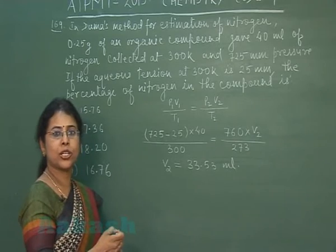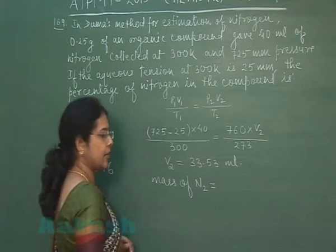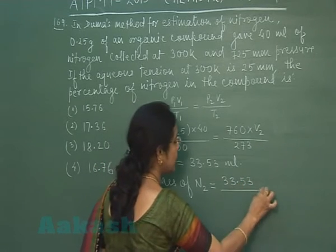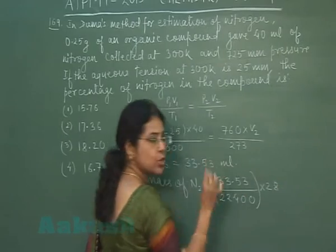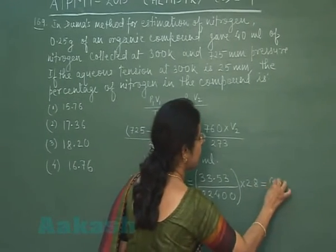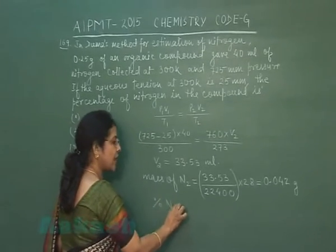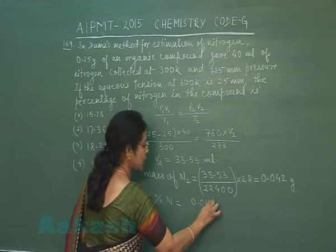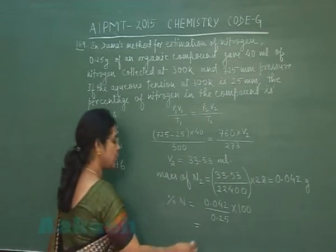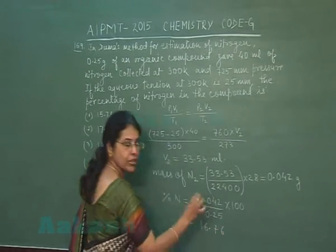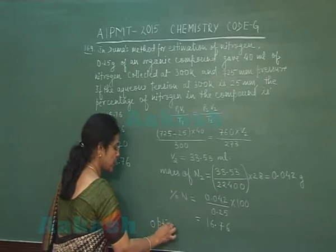This volume of nitrogen gas is converted to mass: 33.53 mL is converted to moles and then multiplied by the molecular mass of nitrogen (28 g/mol), giving a mass of 0.042 grams. To calculate the percentage of nitrogen: this quantity is present in 0.25 grams of organic compound. Solving gives 16.76%.